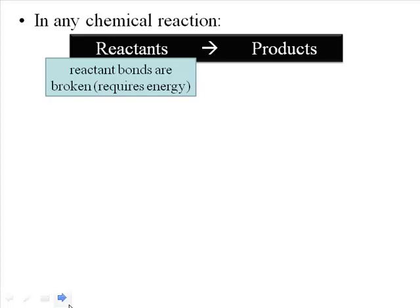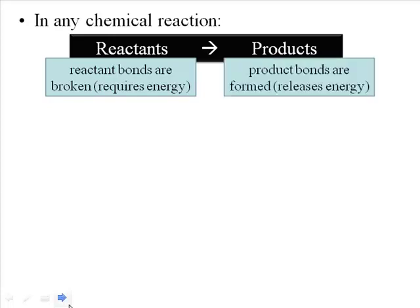Once you have the atoms broken apart, they can reform and create new products. When you do that, you make brand new bonds. As we just saw, when you form a bond, that actually releases energy. So there's a net process here: first you put in energy — it's like an investment — and then you get out energy from that process. You put in energy to break the bonds, and then you get out energy when you form new bonds.